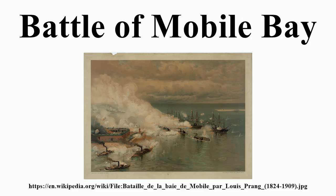The Confederate Navy likewise used the time given to them to improve the defense. Three small side-wheel gunboats of traditional type were stationed in the bay: CSS Selma, carrying four guns; Morgan, with six guns; and Gaines, also with six guns. In addition to these was the ironclad ram CSS Tennessee, which, though carrying only six guns, was a far more impressive fighting machine by virtue of her armor.